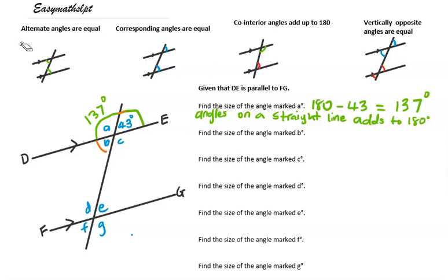Now B forms an X with 43. If it forms an X, then it's vertically opposite. So B is vertically opposite to 43 degrees, which means B is also 43 degrees. And C is vertically opposite to A, so C is also 137 degrees.